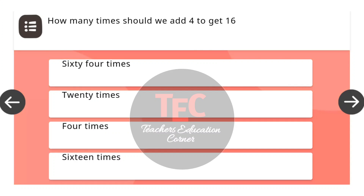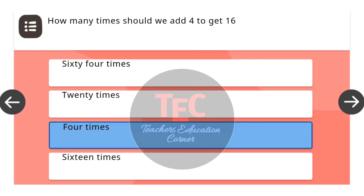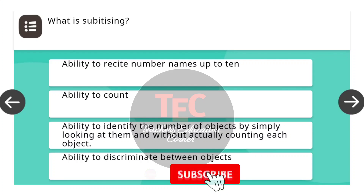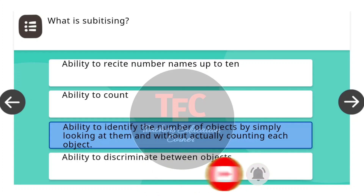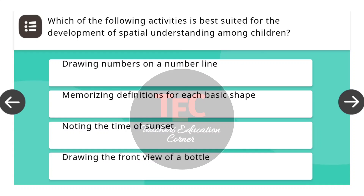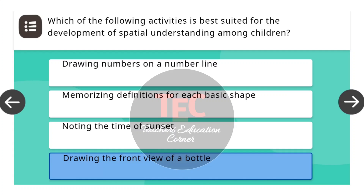Next question: How many times should we add four to get 16? The correct answer is four times. Next question: What is subitizing? The correct answer is the ability to identify the number of objects by simply looking at them and without actually counting each object. Next question: Which of the following activities is best suited for the development of spatial understanding among children? The correct answer is drawing the front view of a bottle.